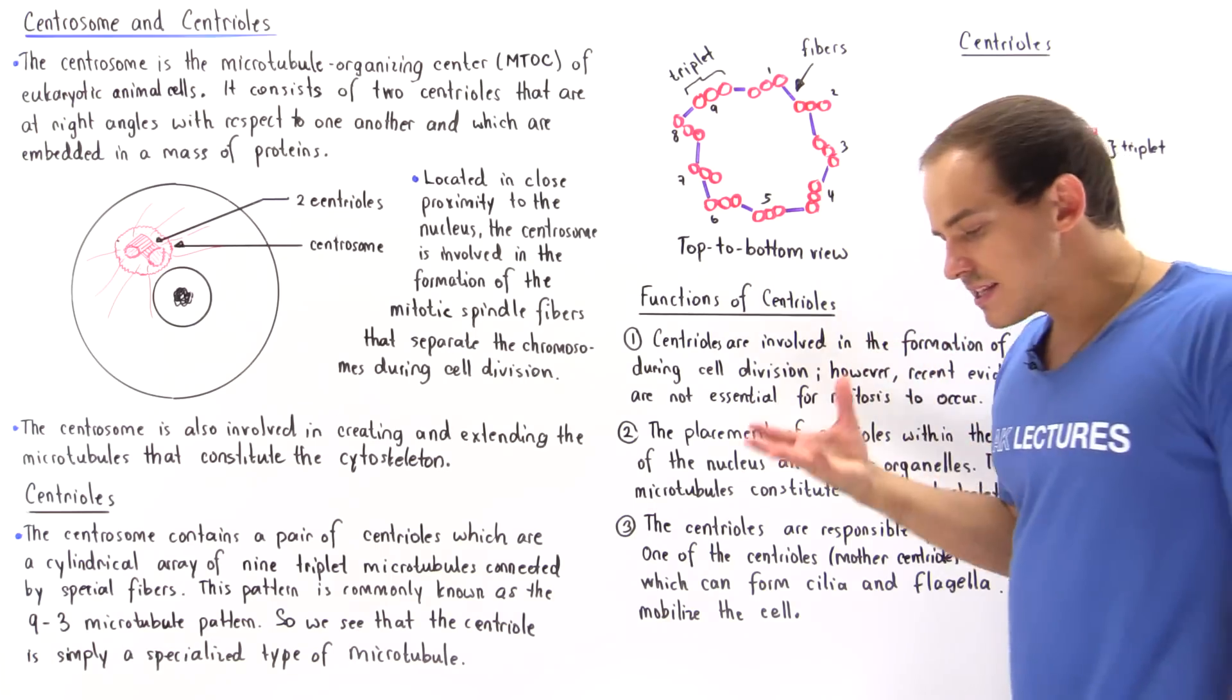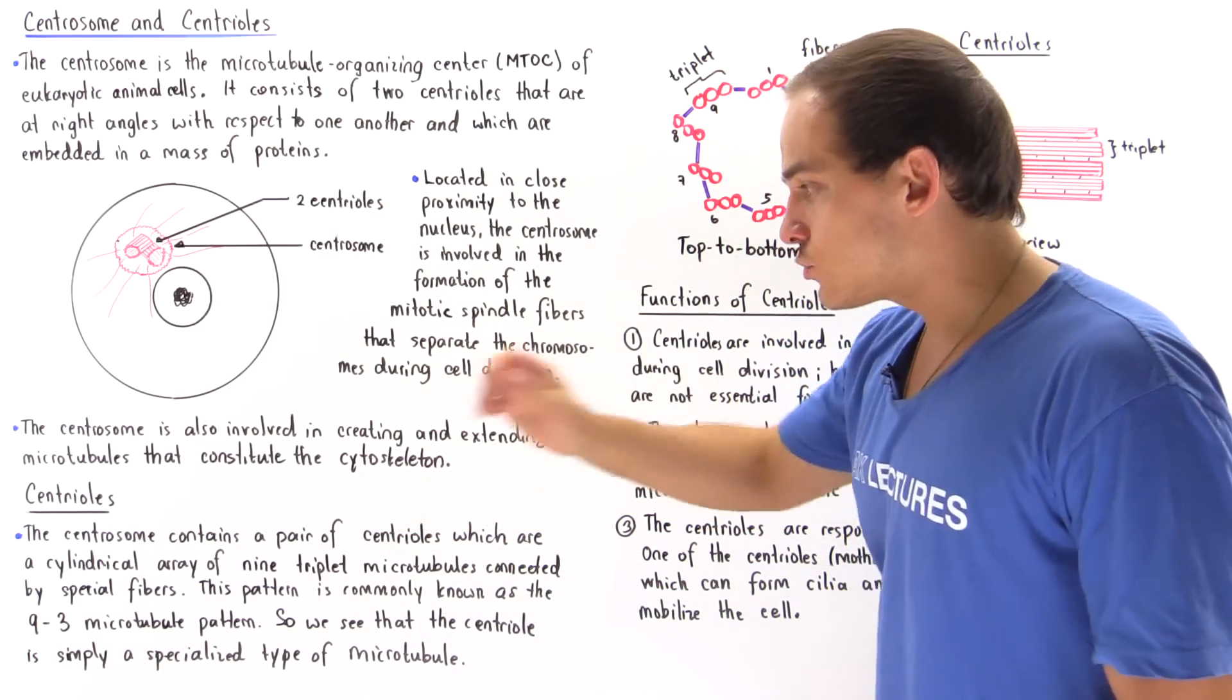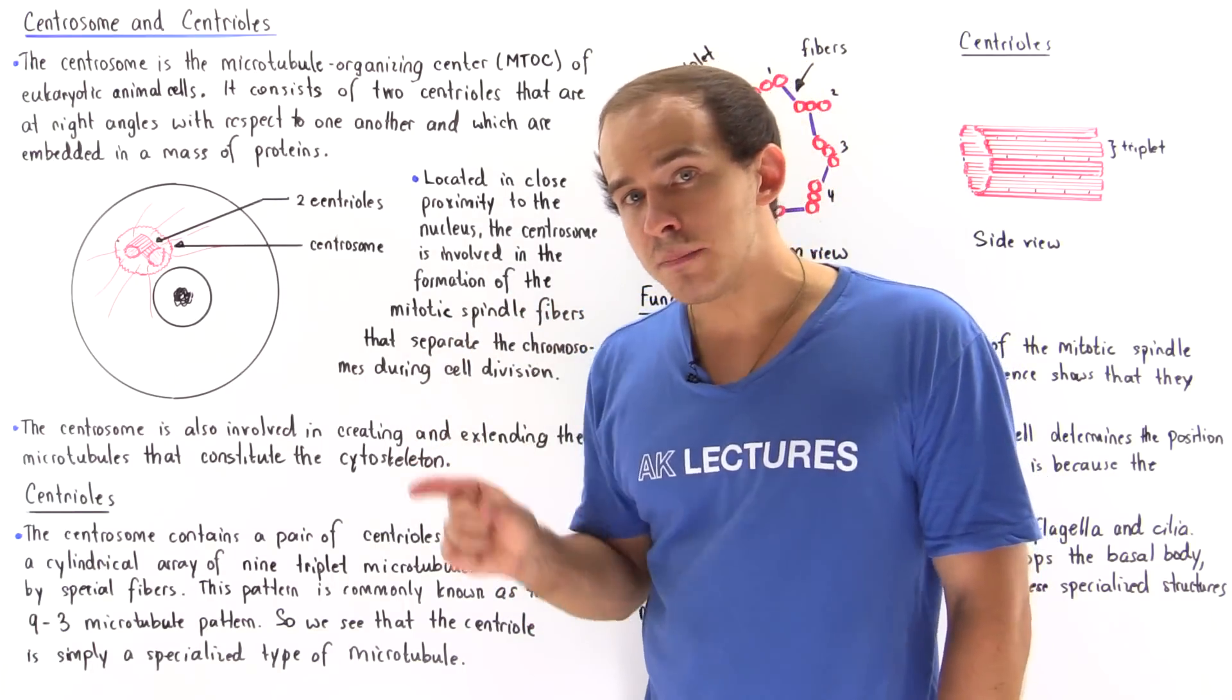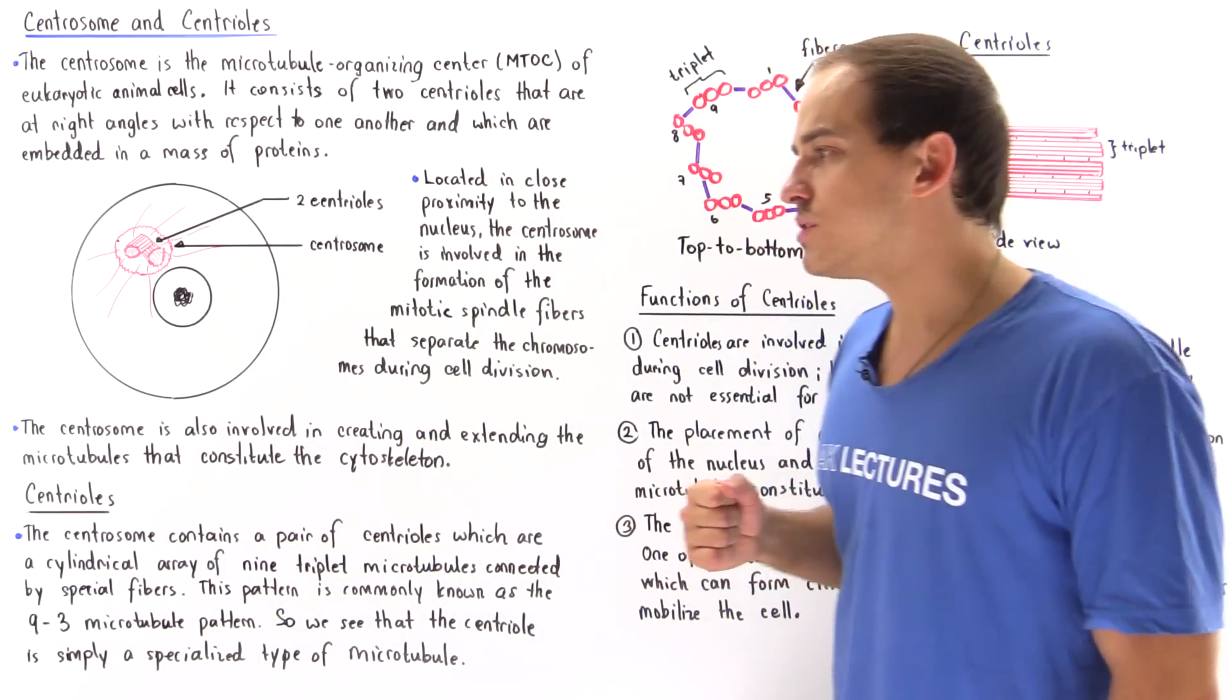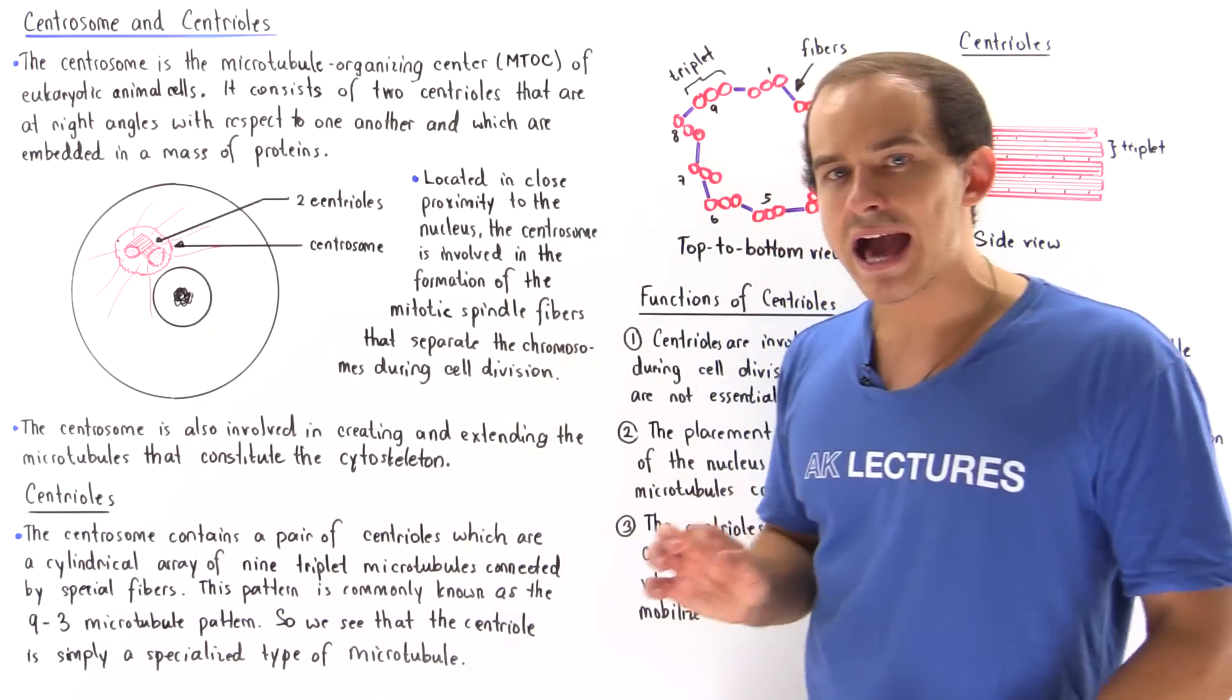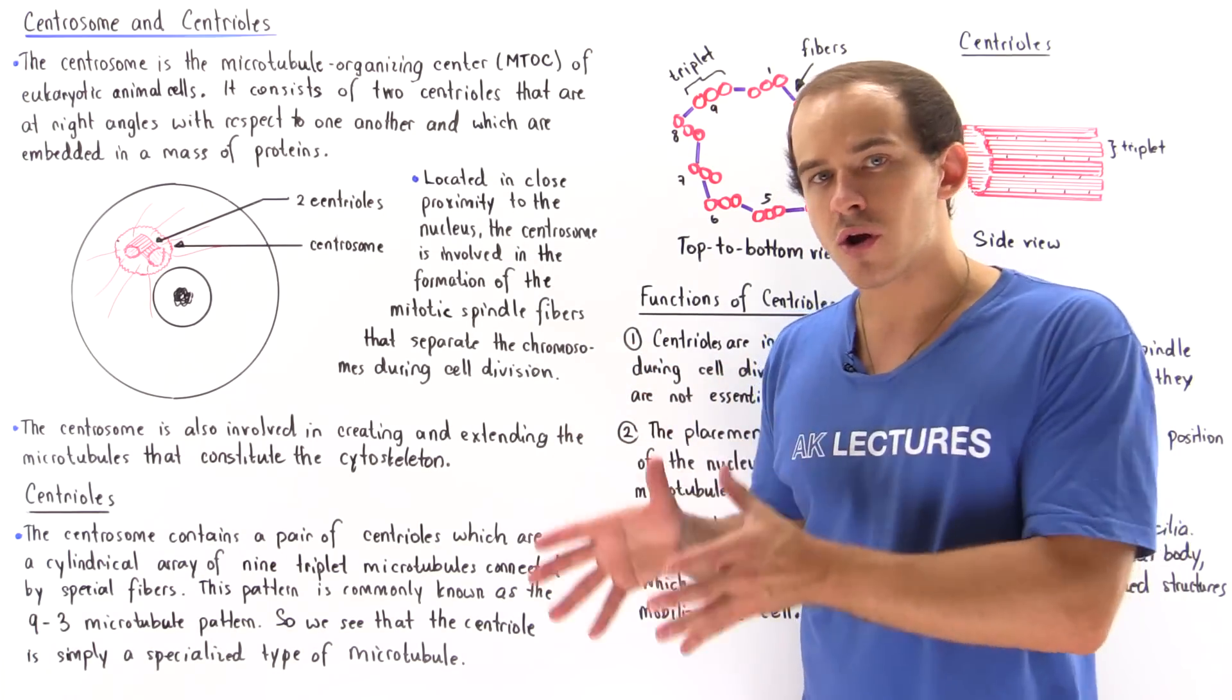Within our centrosome we have our centrioles. What exactly is a centriole? The centrosome contains a pair of centrioles that are a cylindrical array of nine triplet microtubules that are connected to one another by special protein connecting fibers. This pattern is commonly known as the nine to three microtubule pattern, and we see that the centrioles are simply specialized microtubule structures.